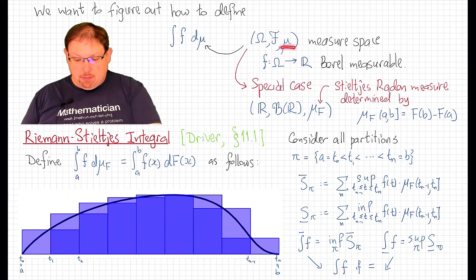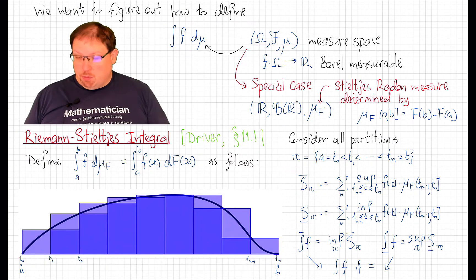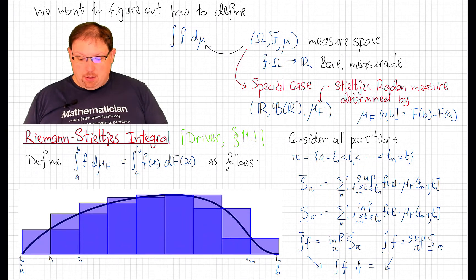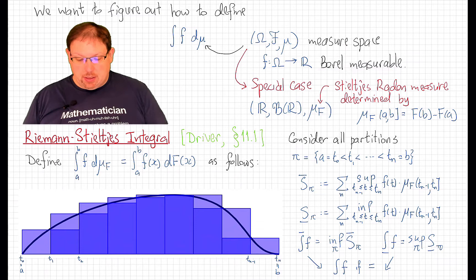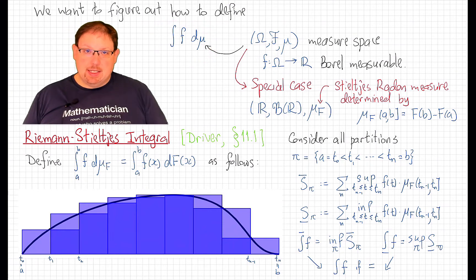where μ is a measure on a measure space, and f is an appropriate kind of measurable function. For us that's going to mean a Borel measurable function. We will of course see that not every Borel measurable function will be integrable in the sense that this makes consistent sense,